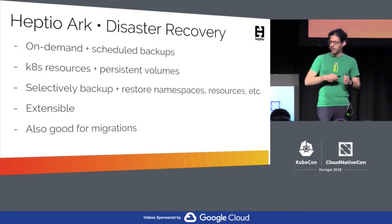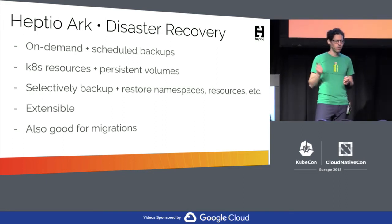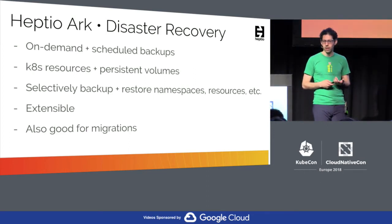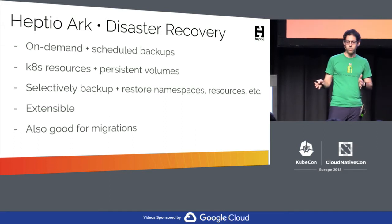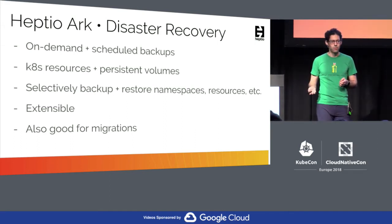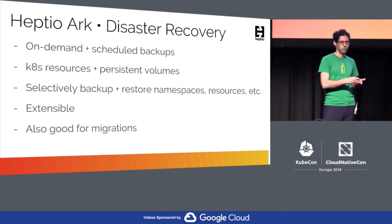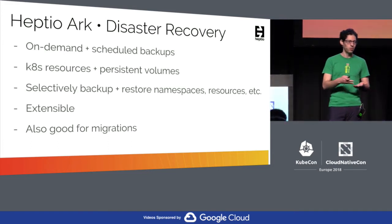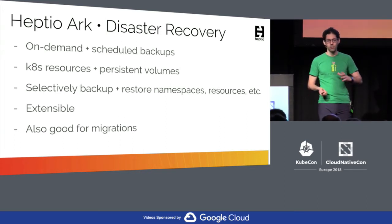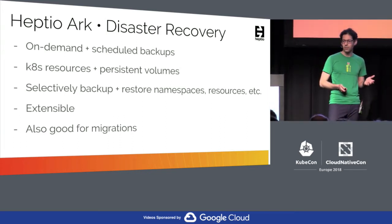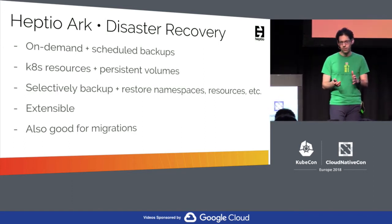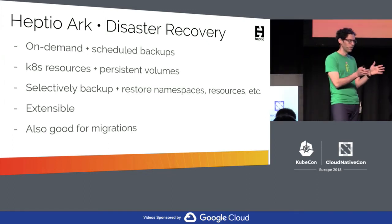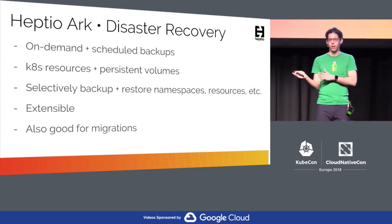I mentioned earlier that I'm the tech lead for Arc, and it's good for disaster recovery but it's also really good for migrations. We do on-demand and scheduled backups with Arc. We back up as many or as few Kubernetes resources as you specify, as well as persistent volume data. You can say I'd like to back up one namespace, or a bunch. You can specify only a certain subset of resources — maybe just pods and services — and you can also use a label selector as part of your selection criteria. We're also extensible, so if we don't have the exact behavior you need, you can write a plugin.